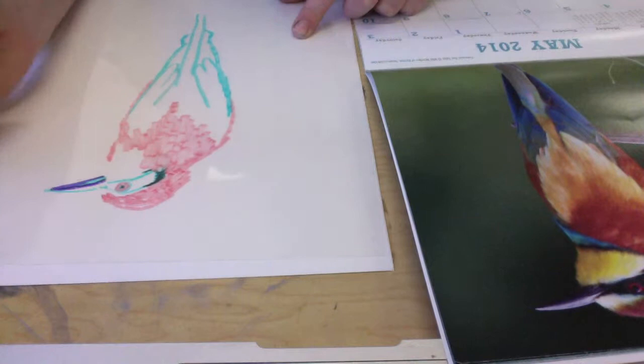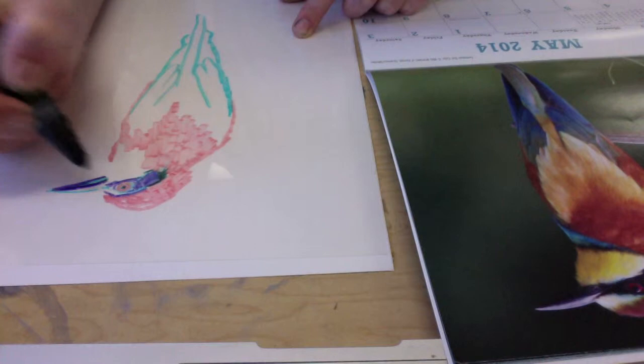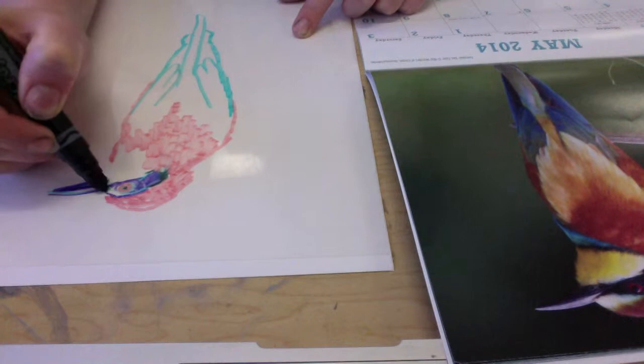So now I'm drawing the beak of the bird. You'll notice that my colors aren't quite the same. I'm using a little bit more purple instead of the black that's in the real picture. But that's okay. It's okay if it doesn't look quite the same.